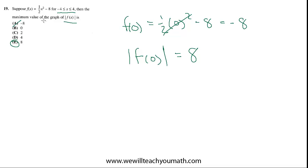Oh, and another way too is also to just throw this in your graphing calculator, half x squared minus 8, and pick off the maximum value. Well, you'll have to put the absolute value into the calculator too so that you're graphing absolute value of f of x.